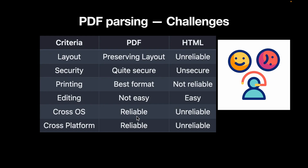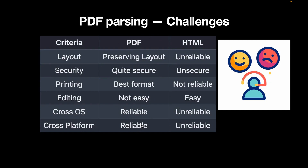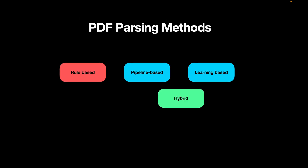PDFs are also very reliable across operating systems and platforms. On the other hand, HTML documents can look quite different in Chrome versus Safari or on a mobile device — that's not the case with PDFs. However, these advantages quickly become disadvantages when we actually want to parse them and use them in our RAG pipeline. PDF parsing methods can be broadly divided into four categories: rule-based methods, pipeline-based methods, learning-based methods, and hybrid methods that combine one or more of these.